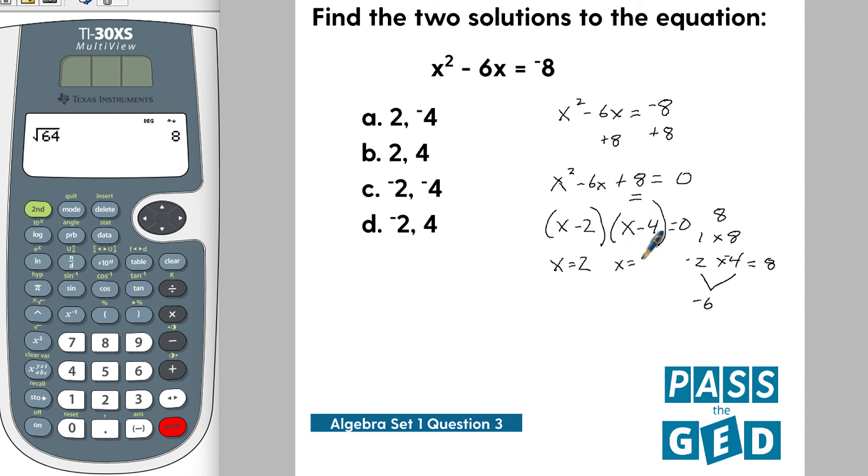So what would the answer choices be? Well, x would be equal to 2 and over here x will be equal to positive 4. So we're looking for positive 2 and positive 4.